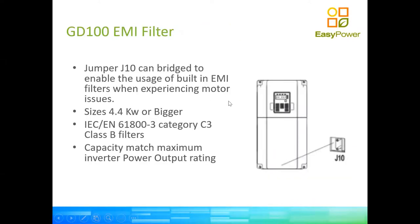Regarding the EMI filter: all pump inverters over 4.4 kilowatts — which are three-phase inverters — come with a built-in bank of capacitors. In applications with very long cable lengths, the ripple that the inverter produces on its power output can be amplified, depending on the cable length and impedance. To smooth this ripple and avoid it amplifying to a level that creates overvoltage on the motor, you can take the cover off the inverter and enable jumper J10, which puts those capacitors in parallel to the outputs, smoothing the ripple. It's similar to the water hammer effect — two waves find each other and amplify.